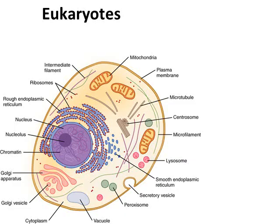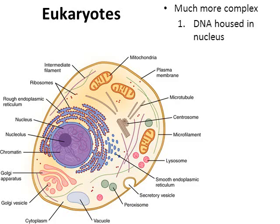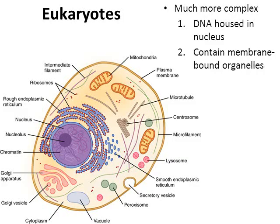First of all, the eukaryotes. These cells are typically much more complex. What makes them more complex is that their DNA is housed in a protective nucleus. You'll often hear the definition of a eukaryote as a cell with membrane-bound organelles — that's another reason why they are more complex.